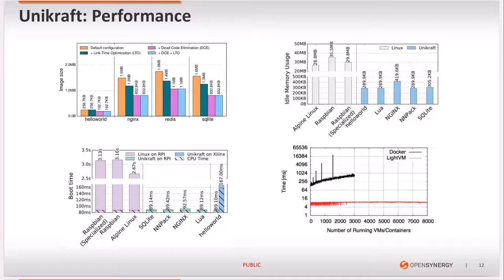Regarding boot times, comparing common applications running on Unikraft against Linux images, the difference is significant as most Unikraft applications boot in less than 100 milliseconds. The last graph shows a comparison of LiteVM, based on work preceding Unikraft, against Docker booting on a 64-core server, demonstrating how it is possible to boot a large number of Unikernels on a given core while maintaining high performance. The conclusion is that Unikraft provides an environment for highly performant operating system images, making the addition of guests no longer expensive.